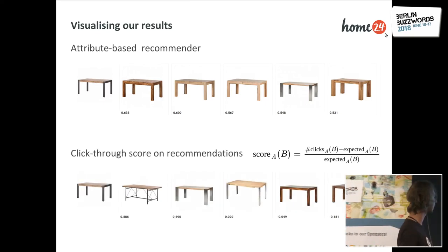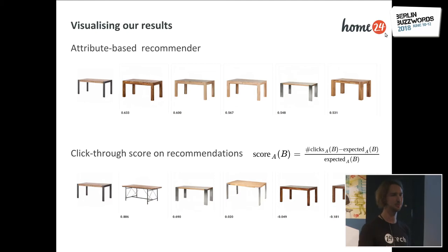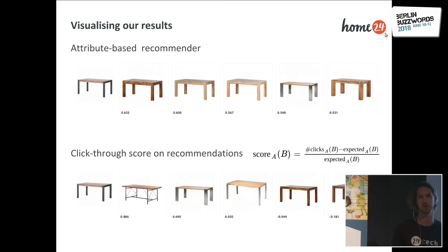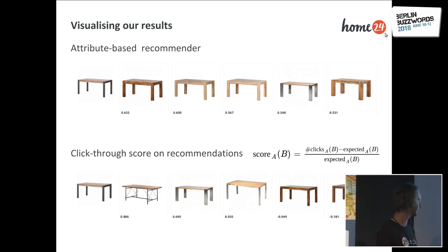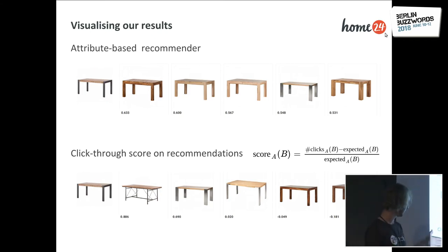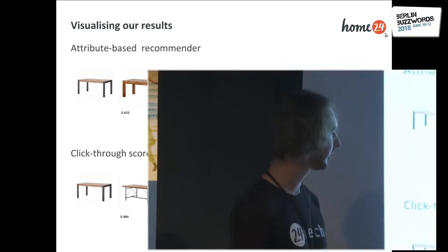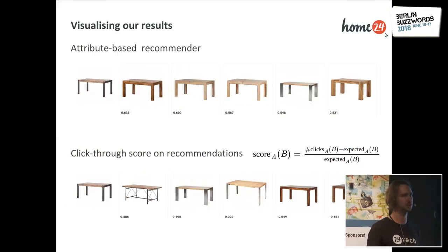We visualized our click-through score on the recommendations. We have the recommendation slider and we track for each recommendation which product we show in which position, giving us an expected number of clicks — it's a well-known effect that people click on the first product more than the second, more than the third, and so on. We adjust expected clicks based on position, then track actual clicks, and comparing those two gives us a click-through score. The three recommendations with a positive score are underrated — they should be shown higher in the slider. All of them have the effect of looking very similar, having metal legs, having a similar color wood. The two recommendations with a negative score are being shown too high; visually they don't quite match the table even though based on the attributes they probably match well.